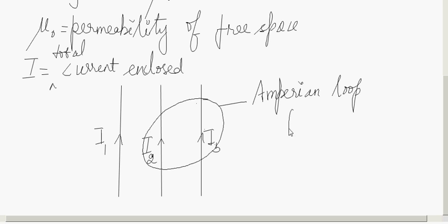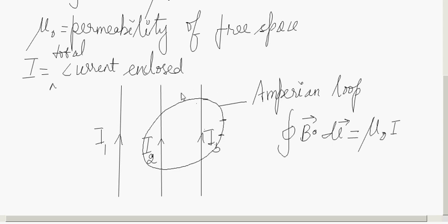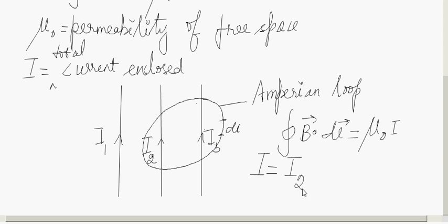When we apply B dot dL, dL is a small infinitesimal line segment. The whole loop is divided into small line segments of length dL, and the line integral of dL gives the total length of the loop. If you assume a symmetric loop, the calculation of B becomes very easy. In this case, the total current enclosed is I2 plus I3 — the loop encloses I2 and I3, but not I1.